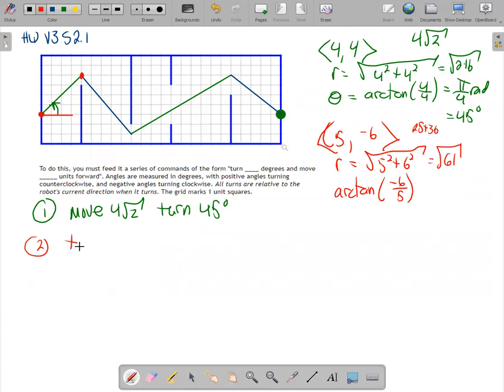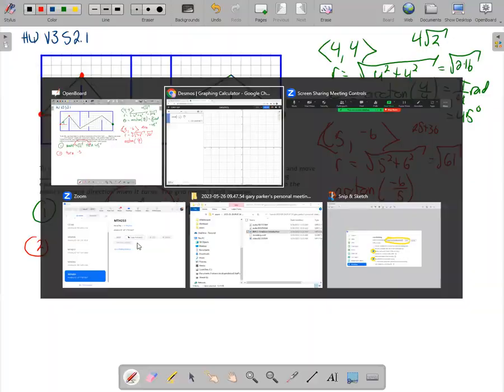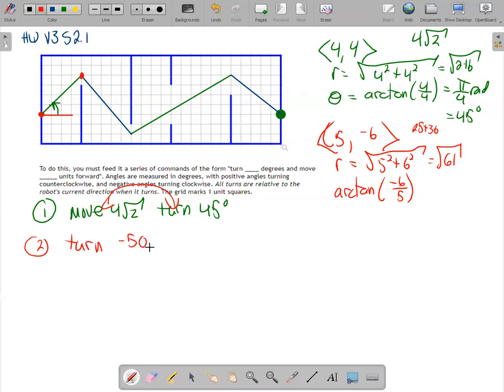So 2, and again, the computer said do the turn first, and then move, which makes sense for the robot. So I'm going to turn negative 50.19 roughly, and then I'm going to move, and it's going to want the decimal version of square root of 61. And really, the robot does need to turn before it moves. That is important. Not move, then turn. So turn 45 degrees. Move in my version. All right, next one.